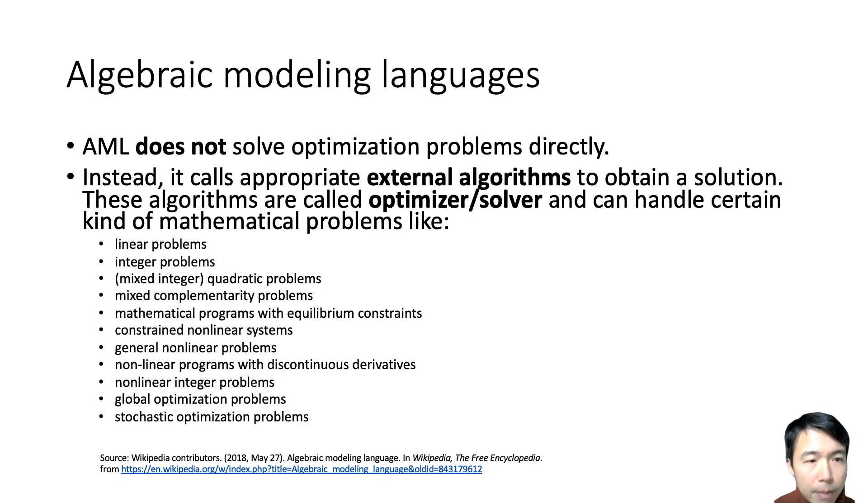However, AML does not solve optimization problems directly. Instead, it calls external algorithms to obtain a solution. These algorithms are called optimizers or solvers and can handle certain kinds of mathematical problems such as linear programs, integer programs, mixed integer linear programs, nonlinear programs, etc.